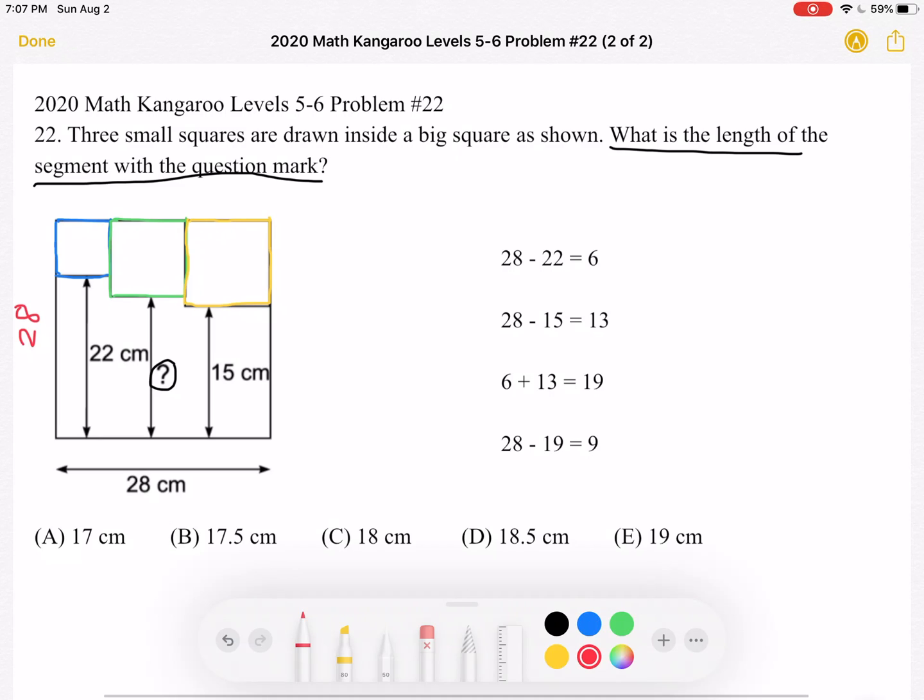Well, we know from the problem that three small squares are drawn inside a big square. So they're all squares, which means that the length of this side must also be 28, because it's a square.